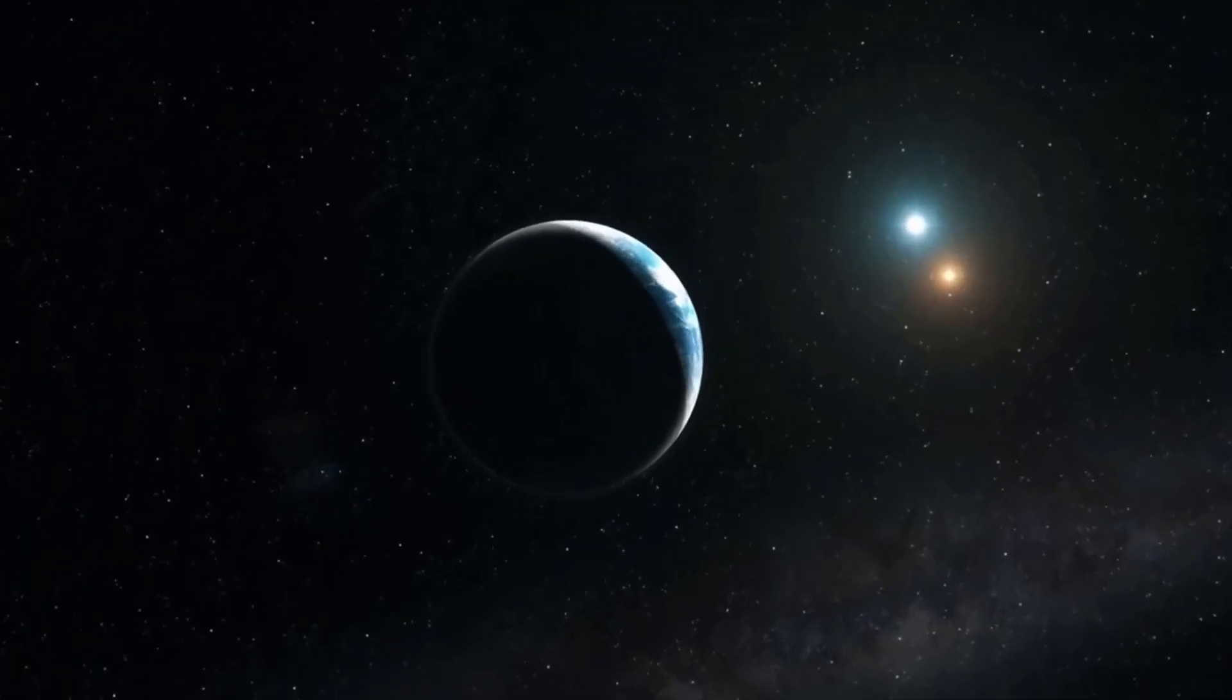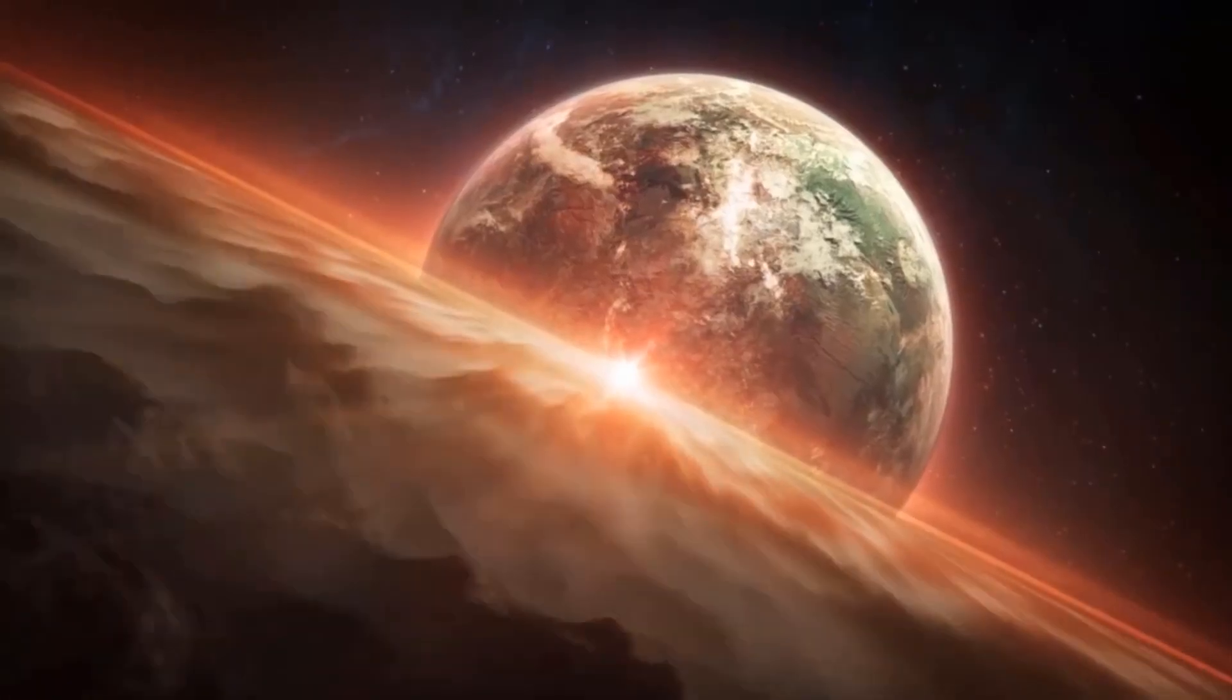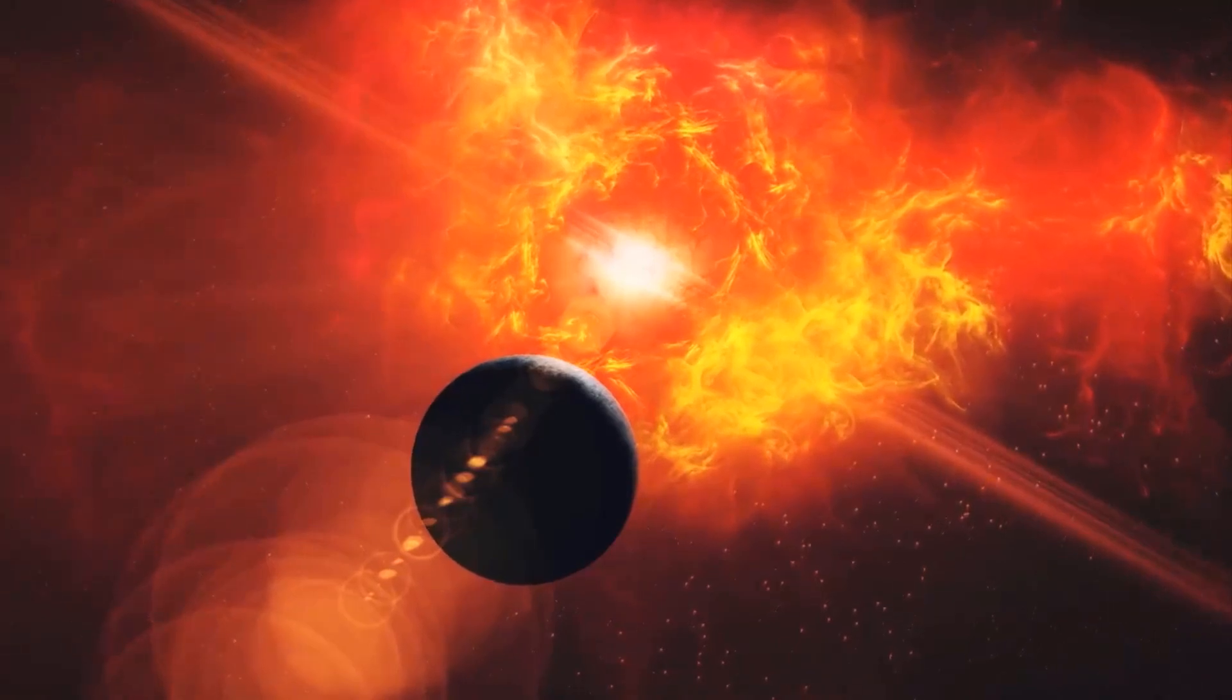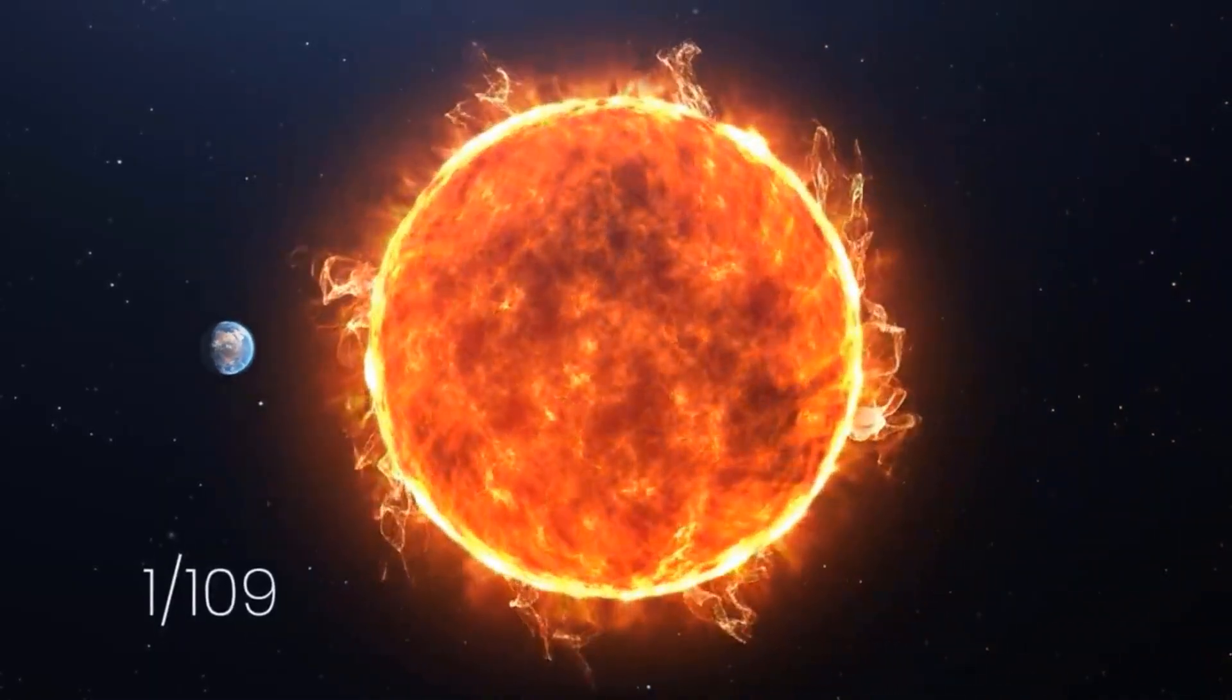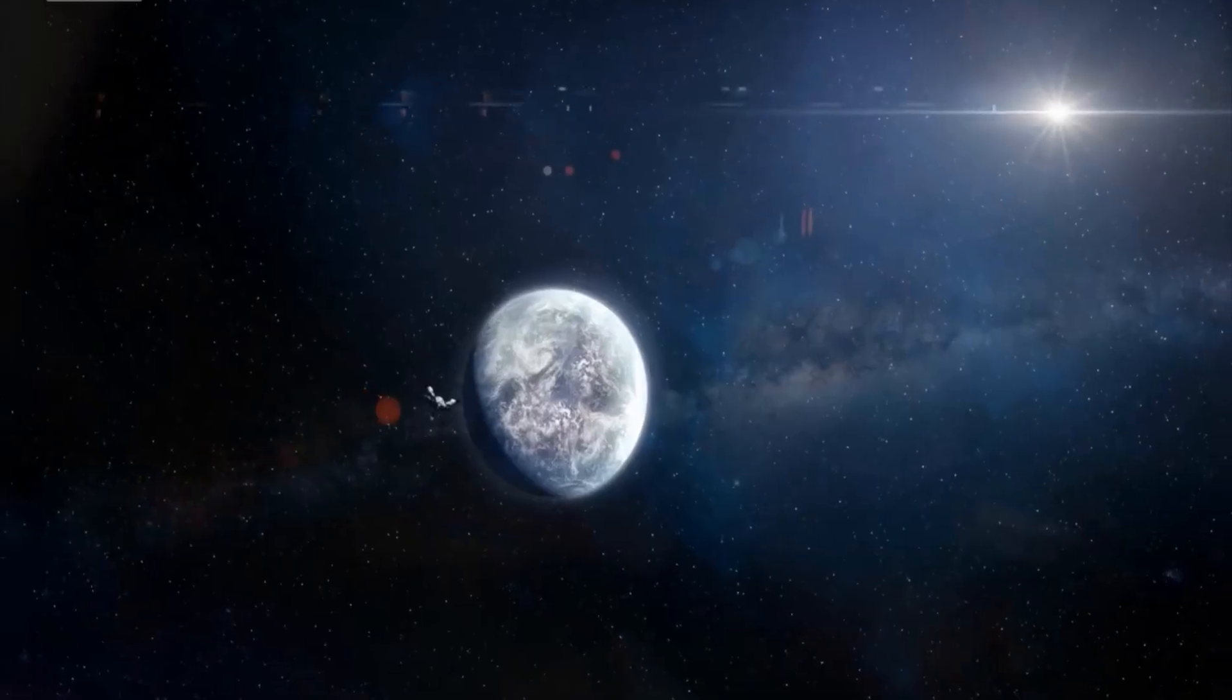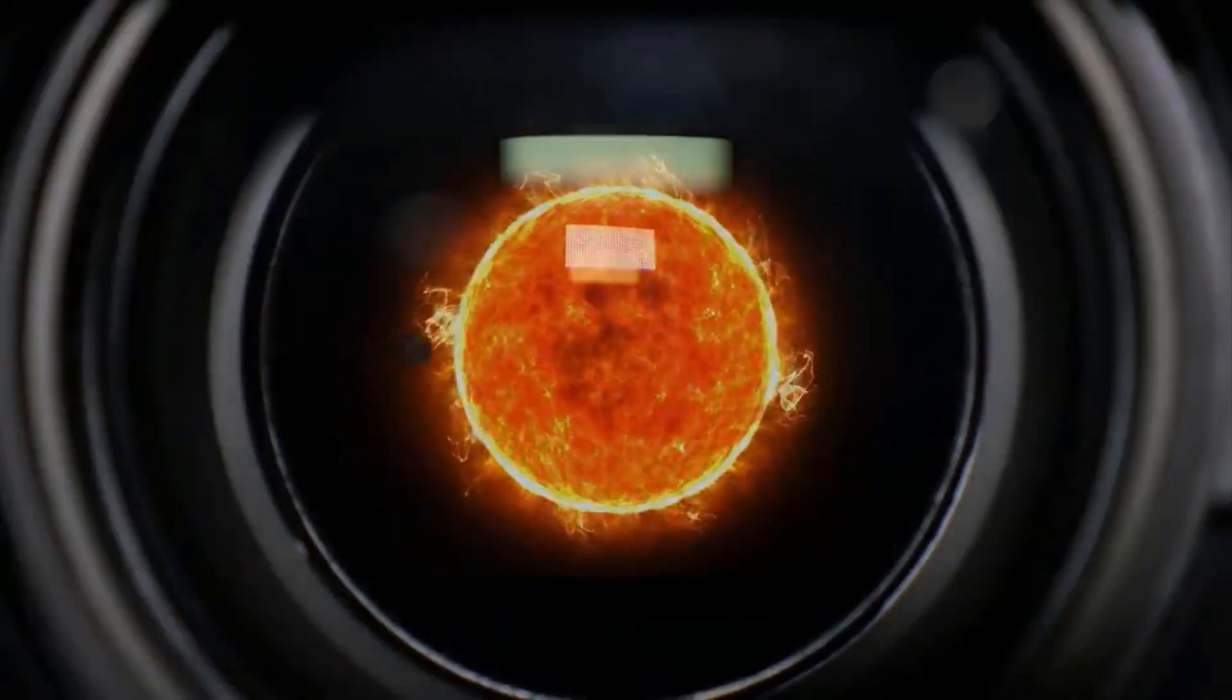The first exoplanets ever observed were discovered in the 1990s, and in cosmic terms, that's not very long ago. Still, it's pretty impressive how much ground scientists have covered over these last few decades. With the help of telescopes both in orbit and on the surface, researchers have found no less than 4,000 confirmed exoplanets and thousands of other candidates.